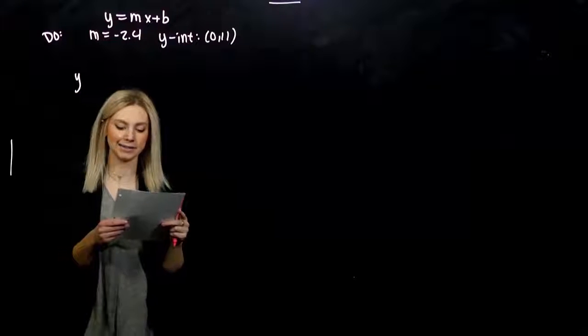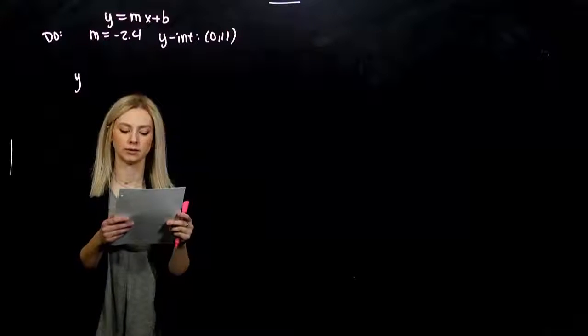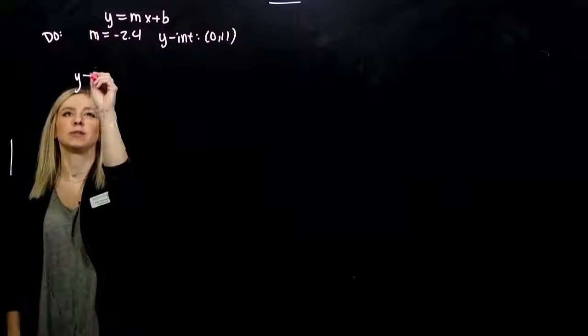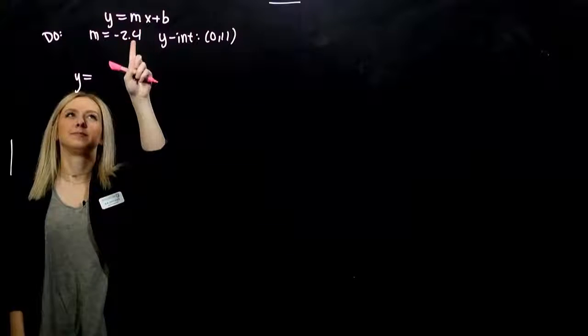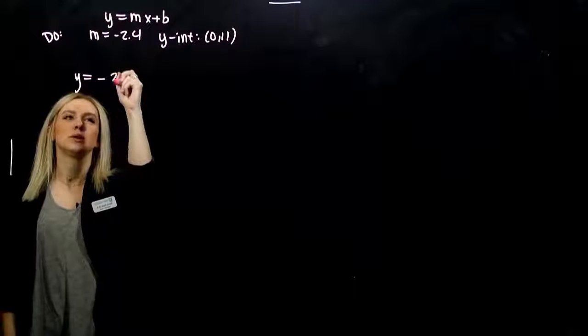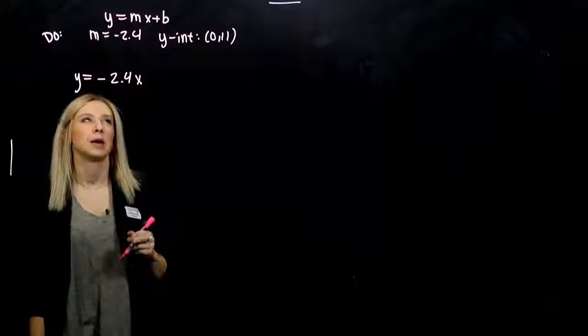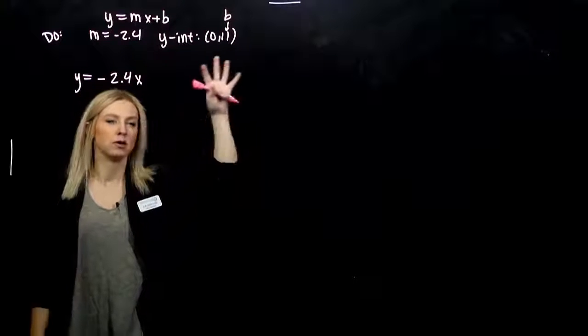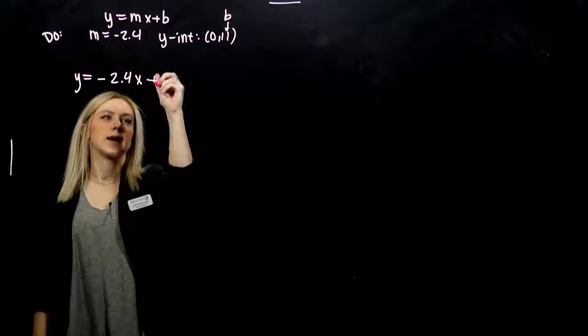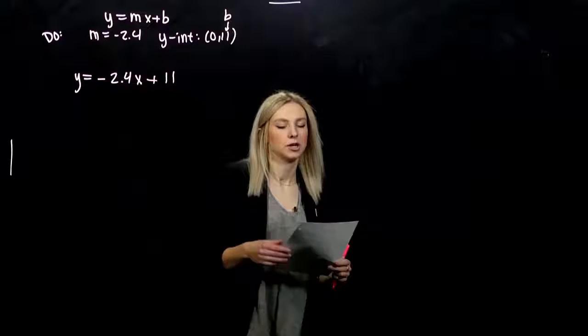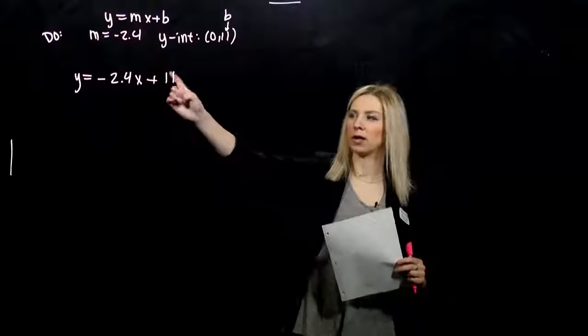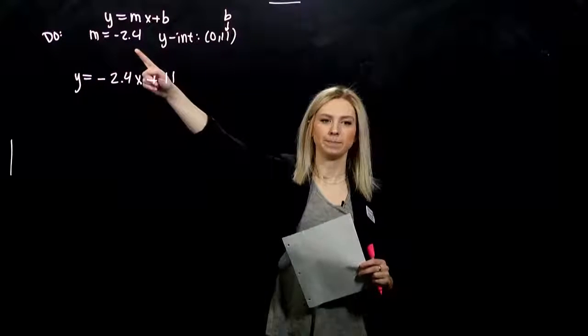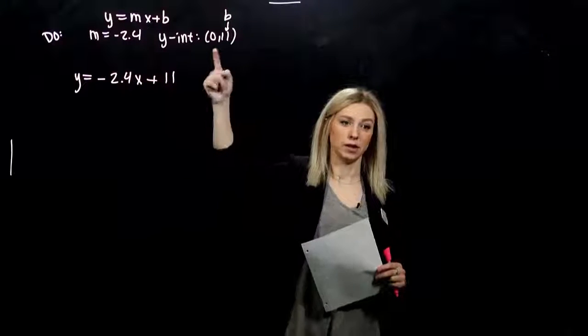When we have a line with slope minus 2.4 and y-intercept (0, 11), find an equation of the line. We just need to plug in the pieces of information that we have. The slope is equivalent to minus 2.4, and my y-intercept, the b-value, is 11. So y equals -2.4x plus 11. You can always check. What's the slope? Negative 2.4. Where's the y-intercept? (0, 11). Got it.